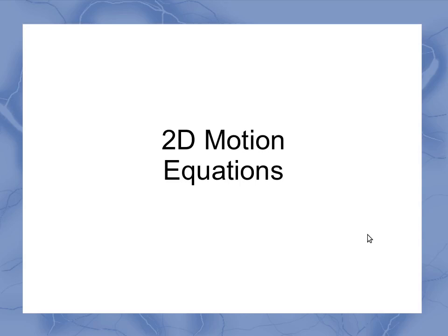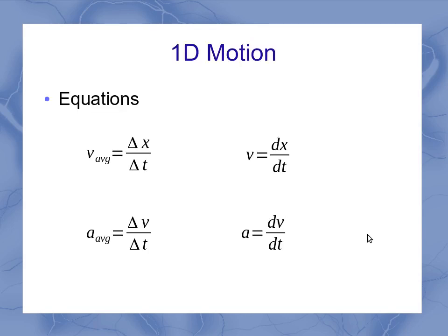Now let's look at some of our other motion equations in two dimensions. As a reminder, these are some of the one-dimensional motion equations for general motion in one dimension. I could define my average velocity and my average acceleration, my instantaneous velocity and my instantaneous acceleration. The instantaneous versions use the derivatives, where the average versions just use the delta x and delta t versions. Because I was only working in one dimension, I just used delta x as my position vector when doing my velocity.